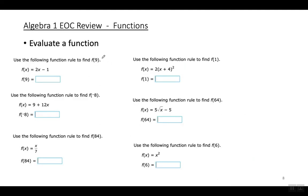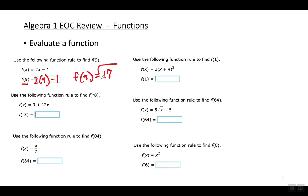Here I have an example of how to evaluate a function — this is super easy. This is written as f of nine, which means you're plugging in the nine into the function. Wherever the x is, you substitute the number nine. Follow the order of operations: two times nine is eighteen, eighteen minus one is seventeen. So f of nine equals seventeen.